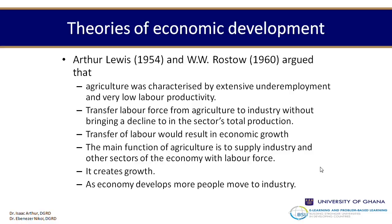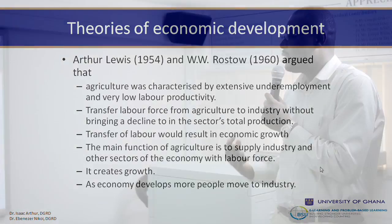First, they say agriculture was characterized by extensive unemployment and very low labor productivity. What this means is that agriculture is a very broad area with a lot of derivatives — a place they see as underexplored because there's so much work that people can actually get from agriculture. That's why they say it has extensive underemployment, because it can basically employ a lot of people. In the same way, productivity within that field is also low because there's so much work to be done.